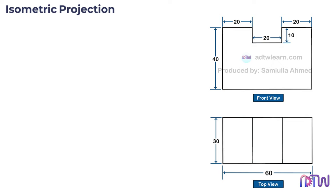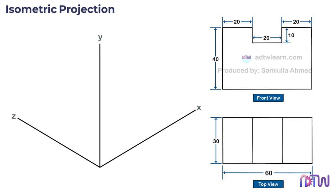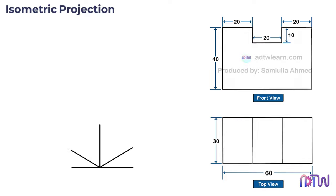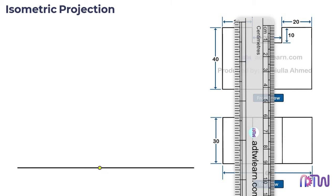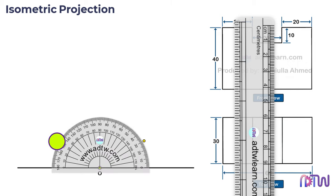The isometric axis consists of the x-axis, y-axis, and z-axis. The x and z-axis will be 30 degrees from the horizontal and the y-axis will be perpendicular to the horizontal. Take a ruler and draw a horizontal line, then consider a center point on this line and label it as O. Using a protractor, construct the isometric axis by marking a point at 30 degrees from both sides and also marking the point at 90 degrees.